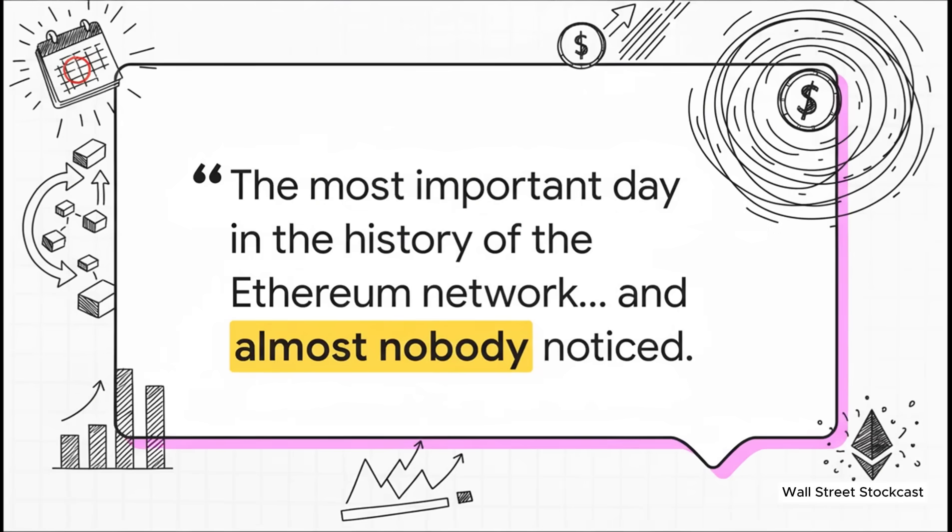And this quote just says it all. While the developers were busy getting the last node synced up and Fusaka officially went live, the rest of the financial world was totally looking the other way. But on-chain, in the raw data itself, something fundamental was shifting about how the network works, and more importantly, how its currency, ETH, gets its value.